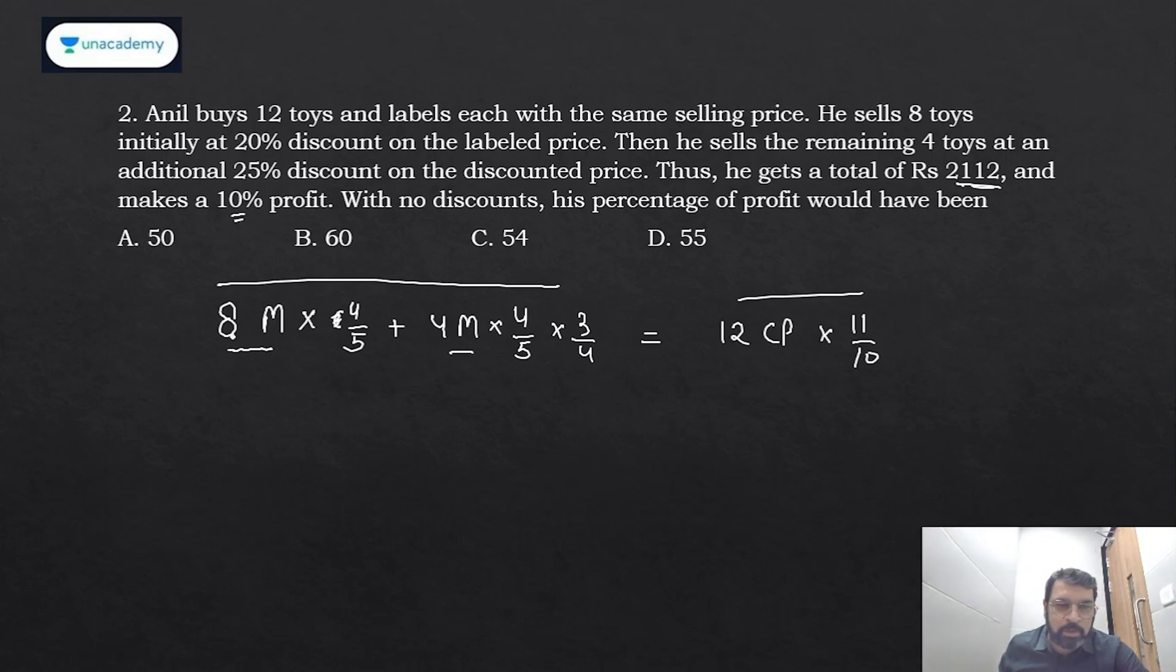Now let's solve it. It will be M × (32/5 + 12/5) = 12CP × 11/10. So M here and CP will be here, which equals 12 × 11/10. This will give you 44/5, so when you cross multiply it will be 5/44.